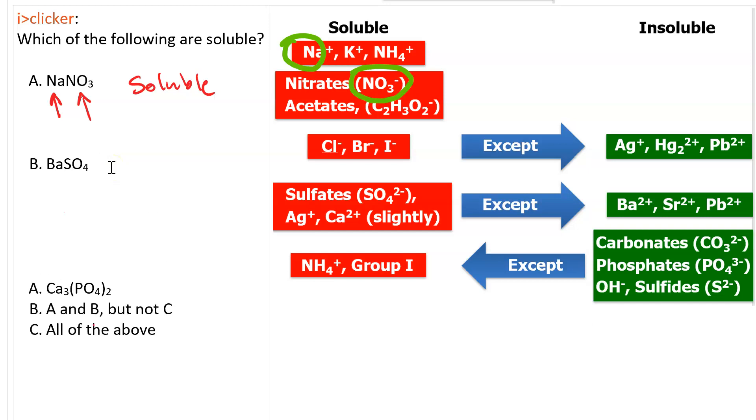For BASO4, there's no rule for BA. But, there is a rule for sulfate. And, we see sulfate over here. Sulfates are usually soluble, but you have to check for exceptions. And, it turns out that barium is one of them. So, barium sulfate is insoluble.